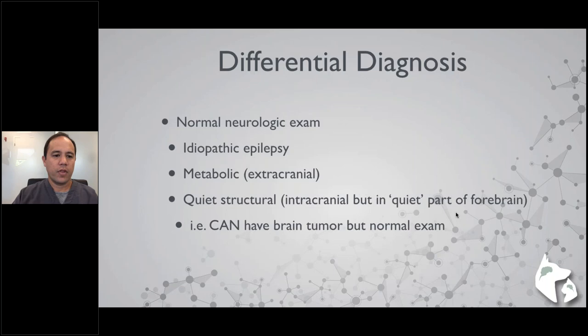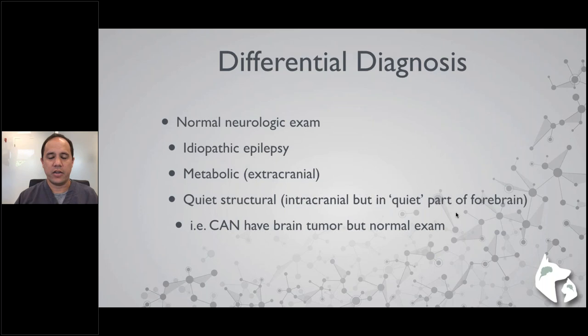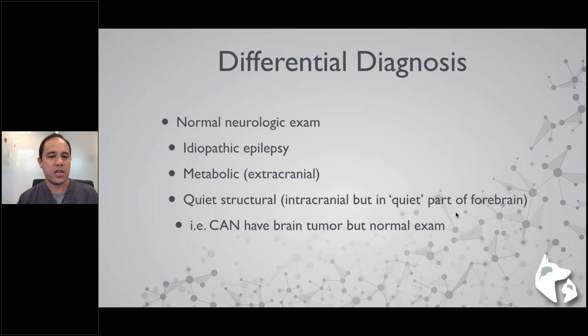From a clinical standpoint, signalment, history, and the neurological exam help sort differentials by likelihood. Patients with a normal neurological examination may have idiopathic epilepsy or extracranial causes higher on the list, but even structural brain problems can present with a normal exam. So a normal exam doesn't rule out a physical problem inside the brain — it just moves idiopathic epilepsy and metabolic causes higher on the differential.